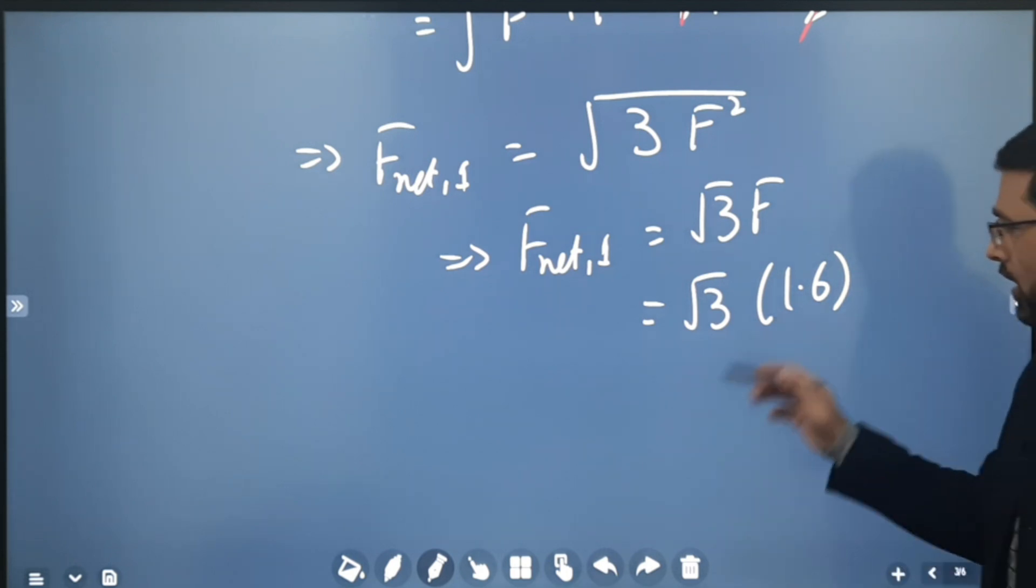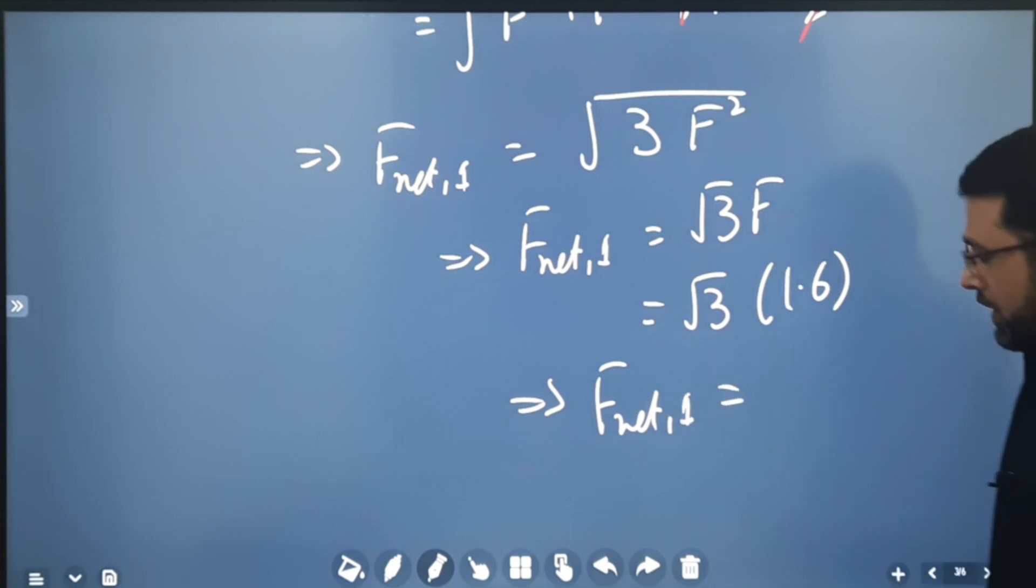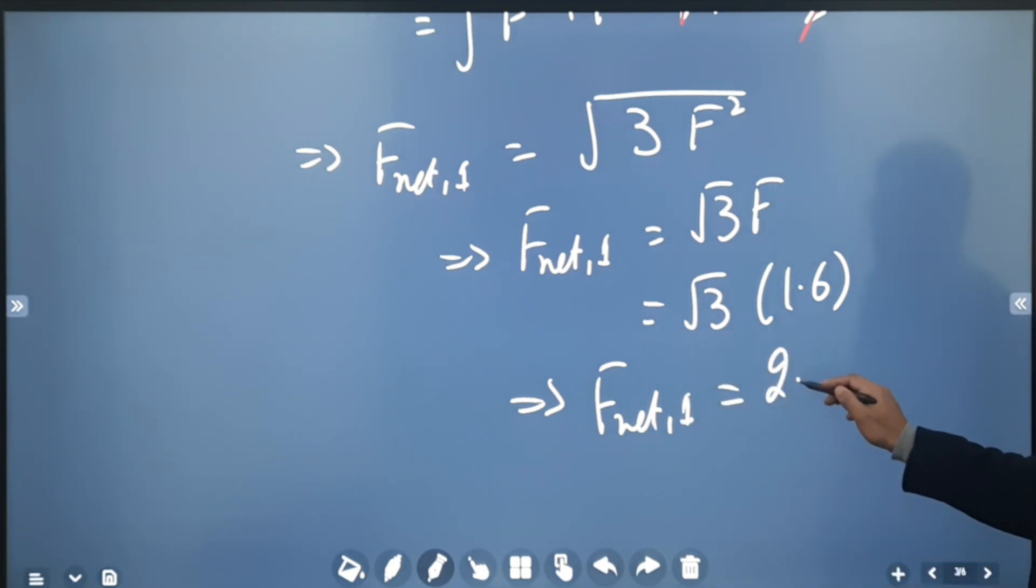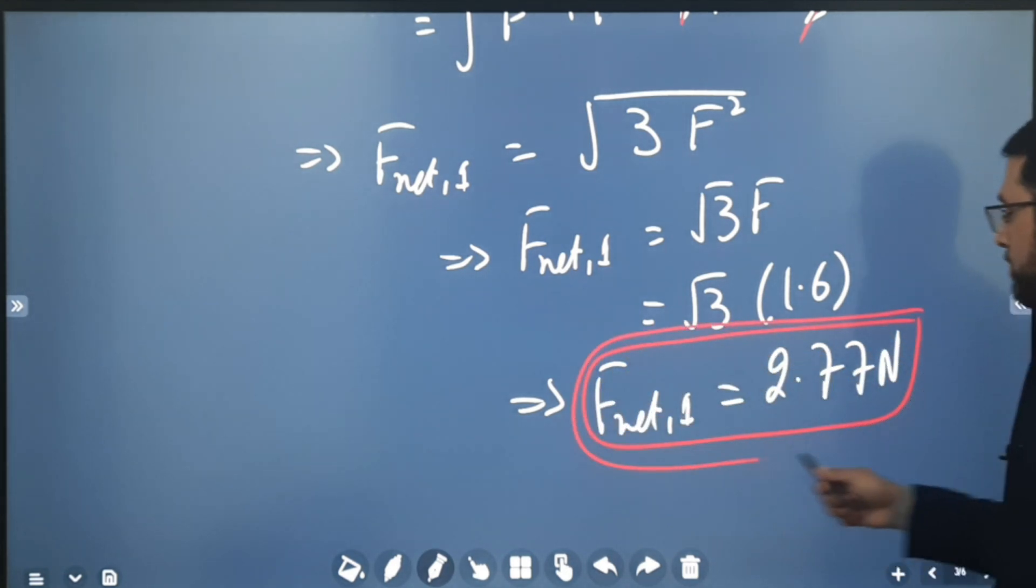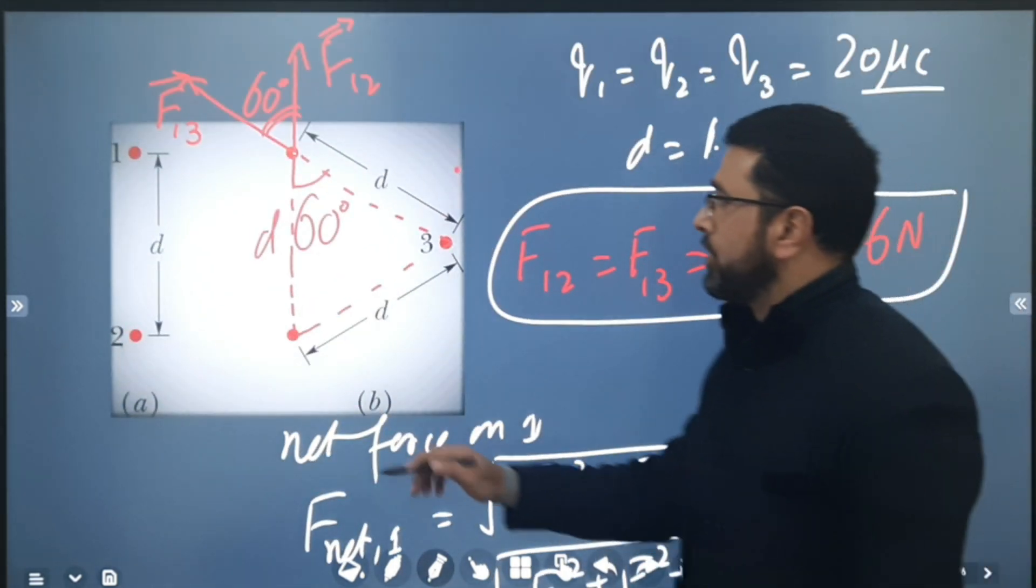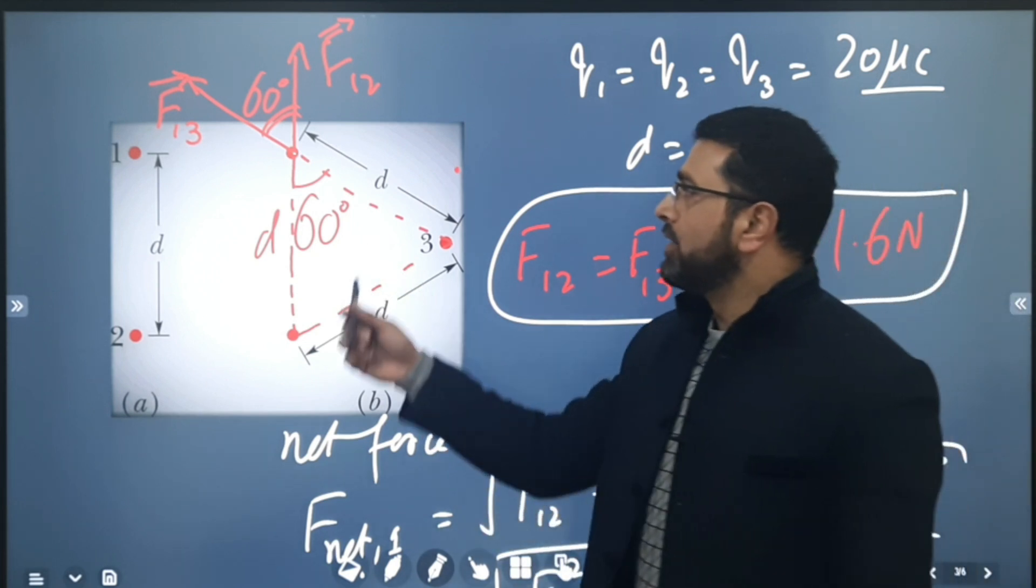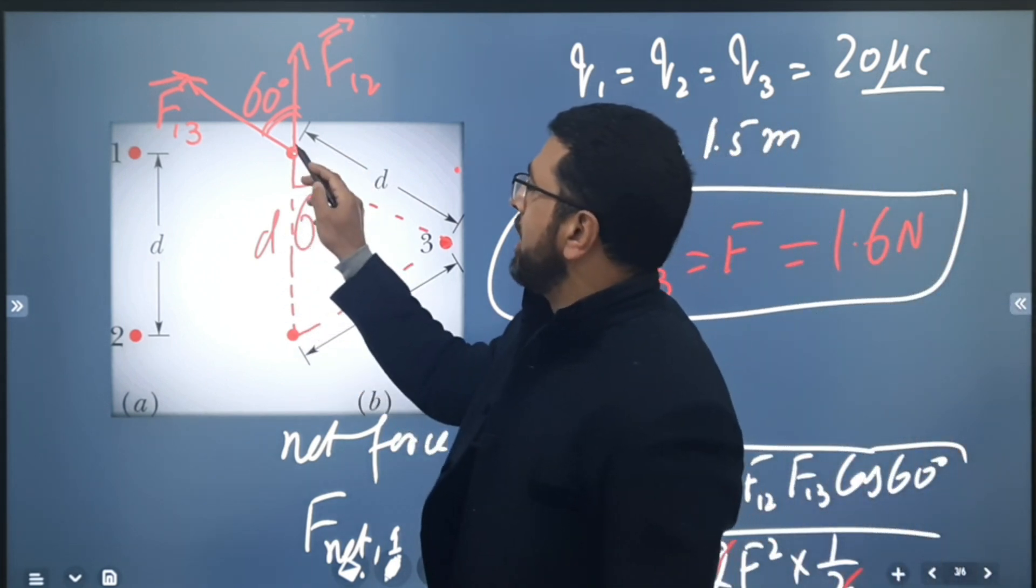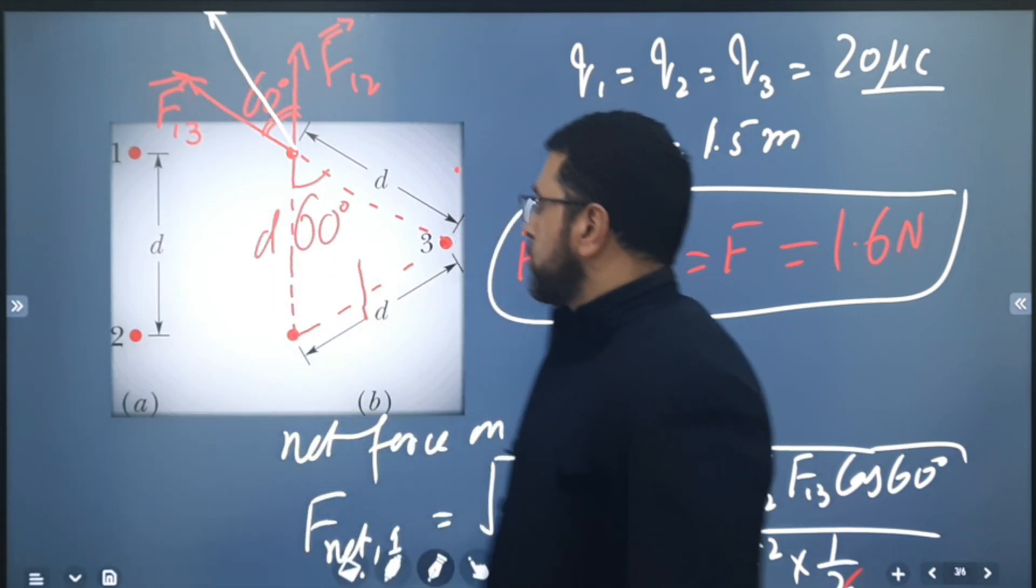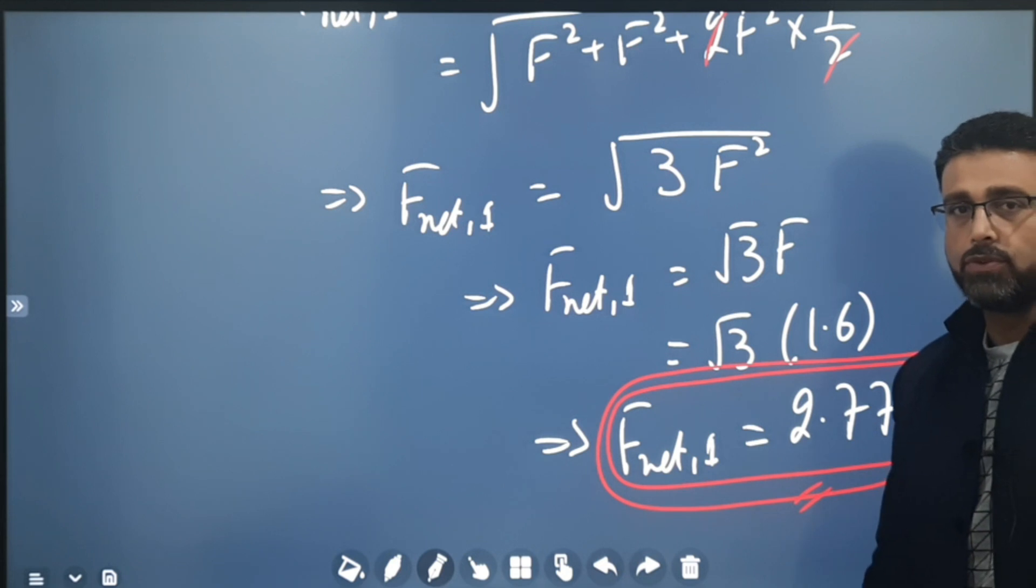If you substitute the value of √3, net force on 1 comes out to be 2.77 newtons. So this is the net force on particle 1 in the second situation. In the first situation it has only one force which was 1.6 newtons, and this one here, that net force will be somewhere in this direction, which happens to be 2.77 newtons. Bye.